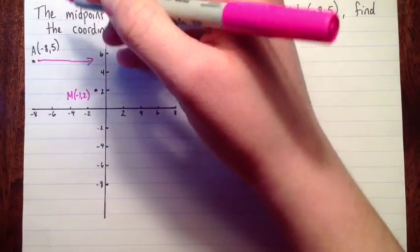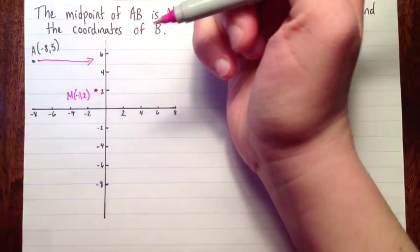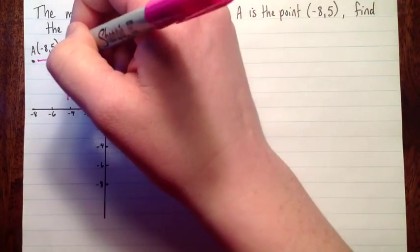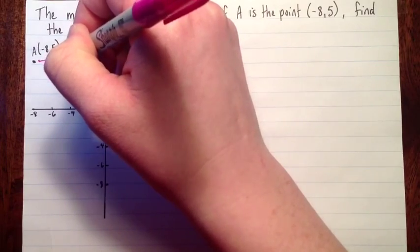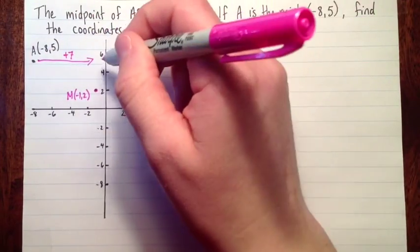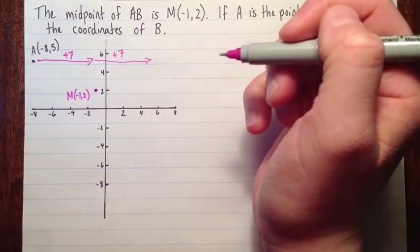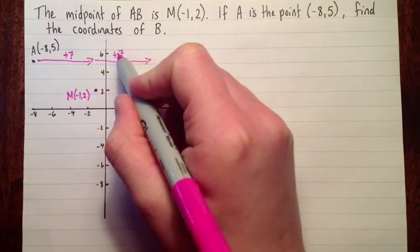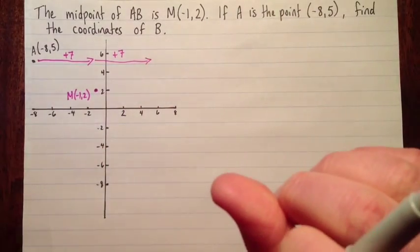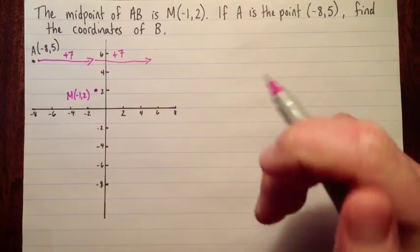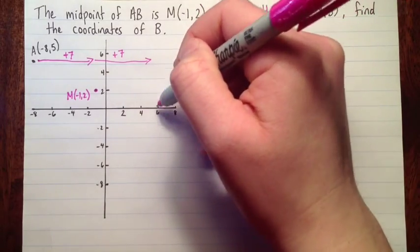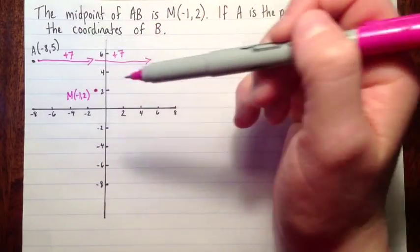So here, what did we do to get from negative 8 to negative 1? In that direction, we added 7. So all I'm going to do is I'm going to add 7 again. So negative 1 plus 7, that's going to put me at an x value of 6. So it will be somewhere on this line here. When I get the y value, we'll know exactly where.